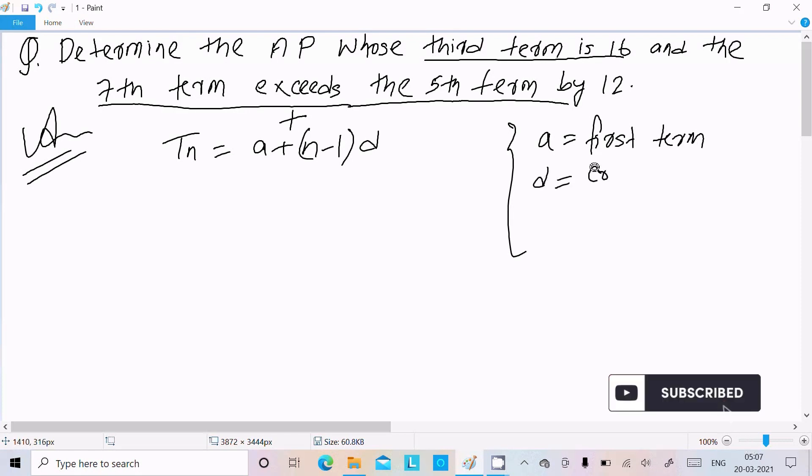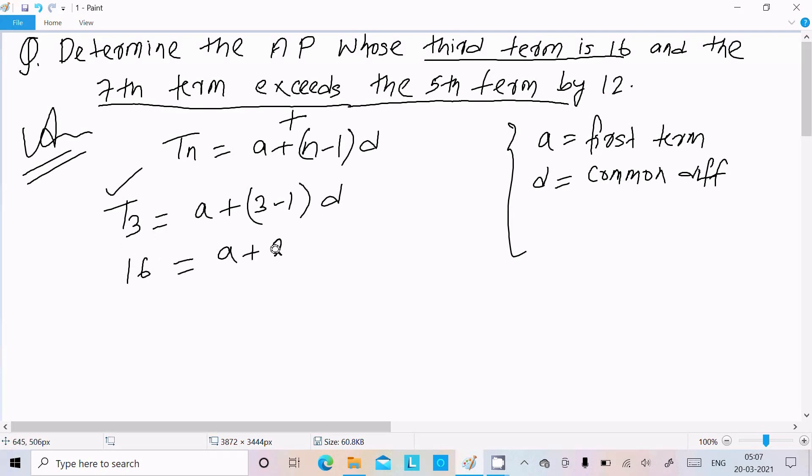Now here, the given third term T3 is 16, so T3 equals a plus 3 minus 1 into d. Since T3 is given as 16, we write 16 equals a plus 2d. Let's assume this is equation 1.